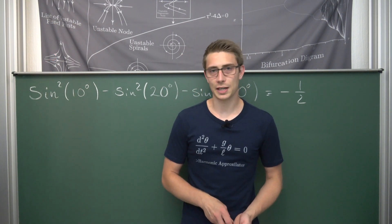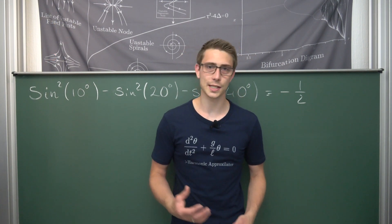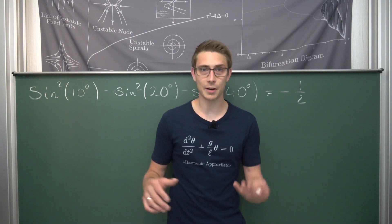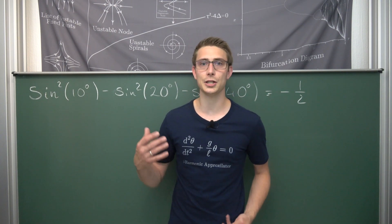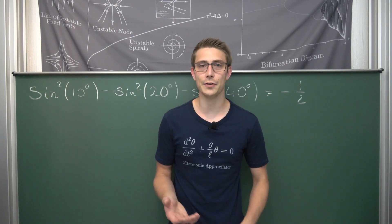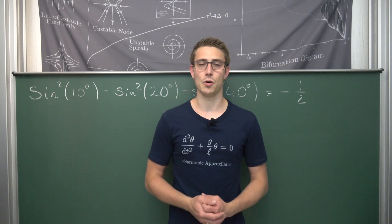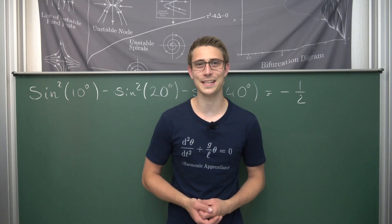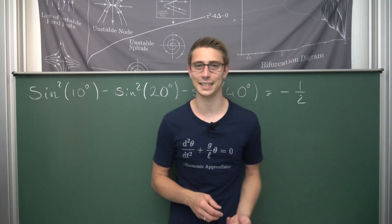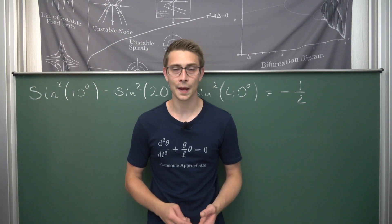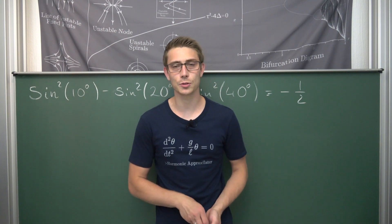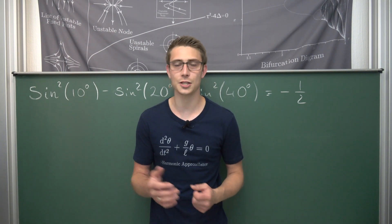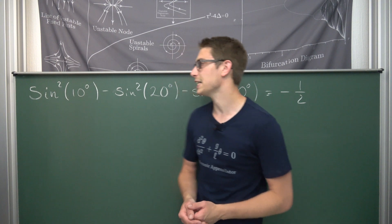Last time around we calculated the cosine of 3 degrees, using some very nice constructions. It was quite a beast to be honest — pretty nice video, link in the description. And today we are going to take a look at another trigonometry fact slash identity.